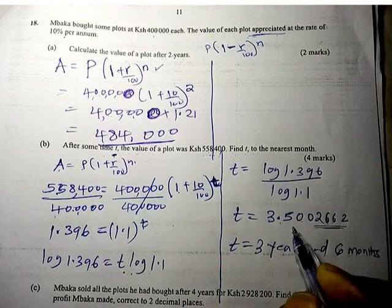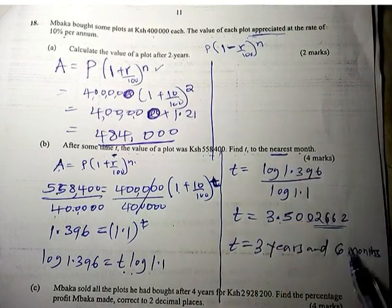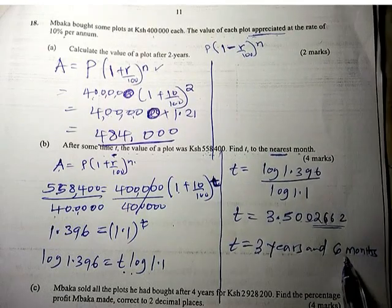We round off like we were told, nearest month. So it is 3 years, 6 months.